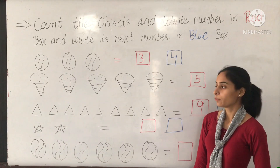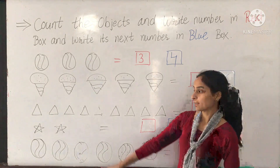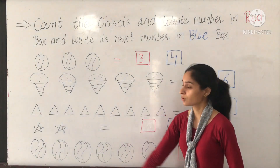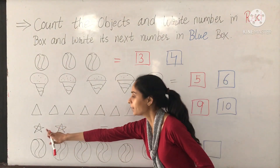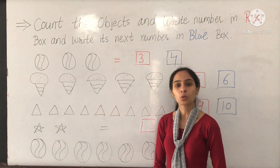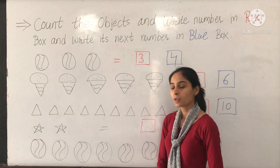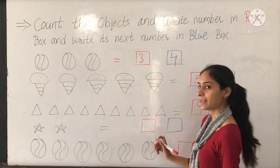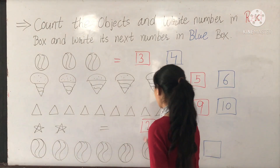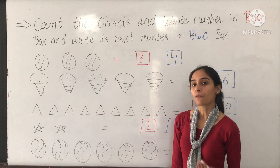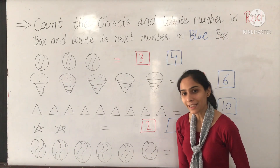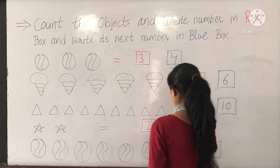Move to the next object — next object is star. Count it: 1, 2. How many stars? 2. So we can write 2 in the red box. And what comes after 2? 3. Very nice.